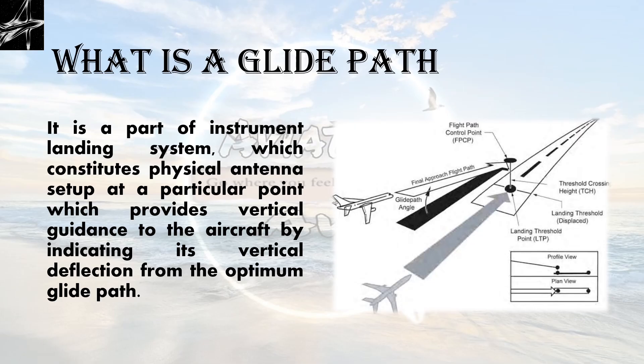First of all, what is a Glide Path? It is a part of the Instrument Landing System which constitutes a physical antenna setup at a particular point, providing vertical guidance to the aircraft by indicating its vertical deflection from the optimum Glide Path.